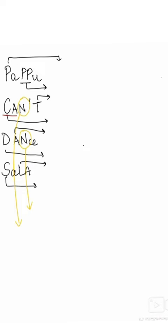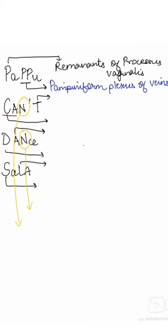So to begin with, we have the remnants of the processes vaginalis from the P. From the double P, we have the pampiniform plexus of veins. From the T, we have the testicular artery. From the C, we have the cremasteric artery.